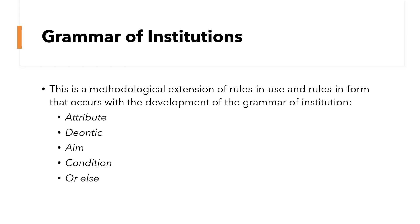We'll focus on the next five ideas that go with grammar of institutions. The first one is attribute — it identifies the doer of the action. Then there's deontic — it identifies whether the action is required, permitted, or forbidden. There is aim — it is the verb of an institutional statement. Condition — this defines the what, when, where, and how of the action or the outcome. And then the more ominous one, 'or else,' which identifies the variety of questions that lay at the core of the political science sphere and may be systematically explored.